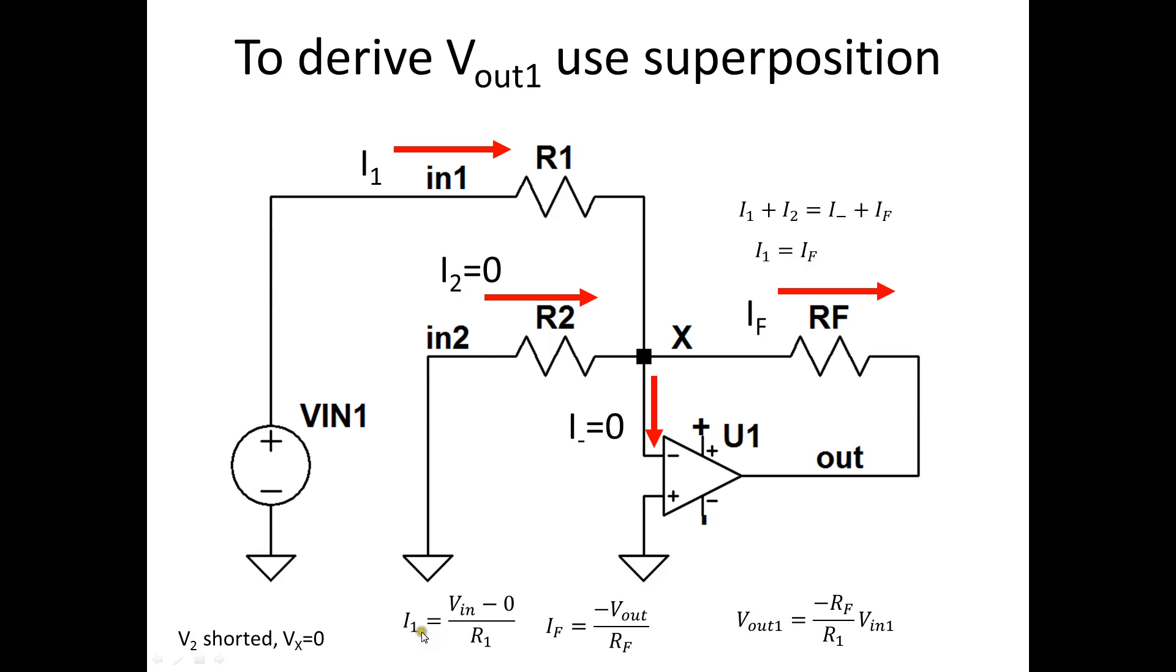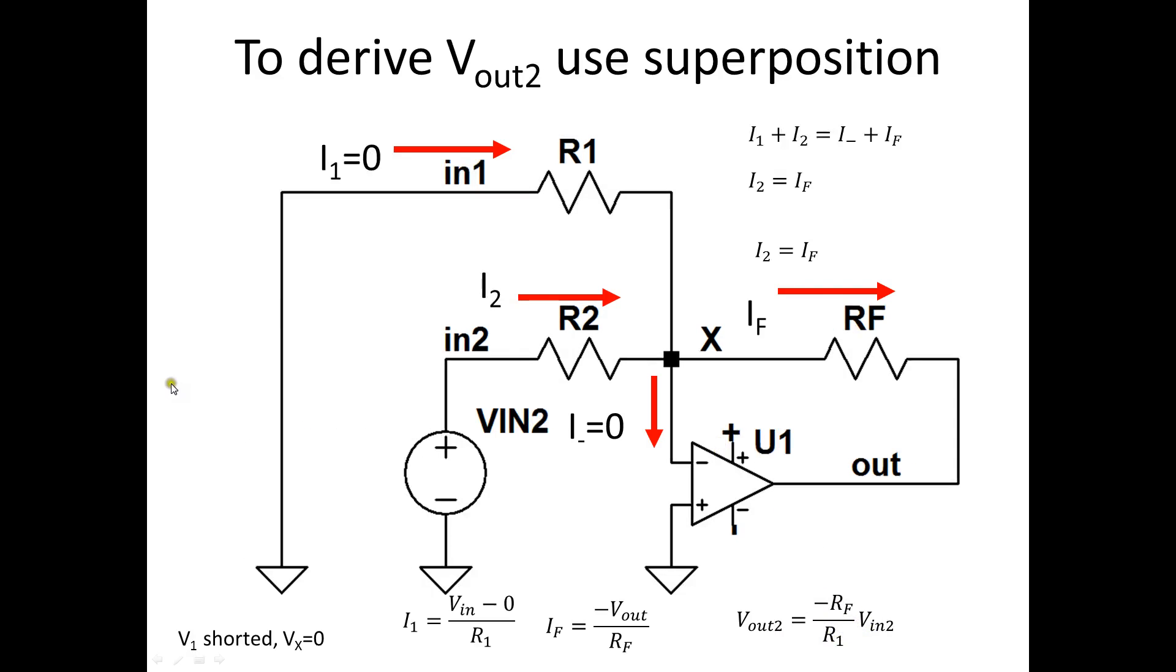And when we use Ohm's Law for these branch currents and substitute, we get Vout1 equals minus Rf divided by R1 Vin.